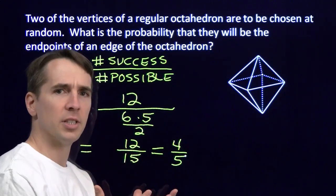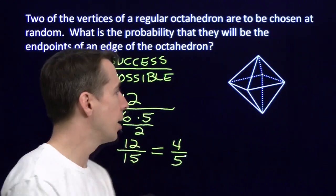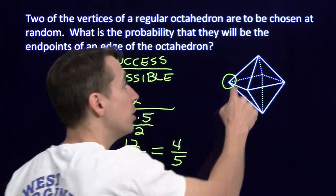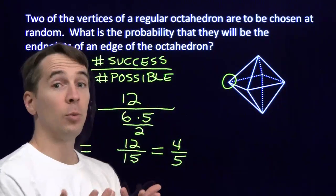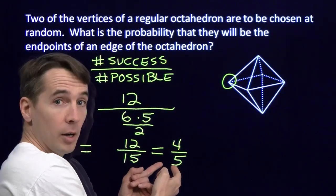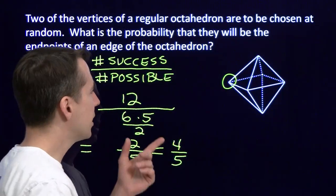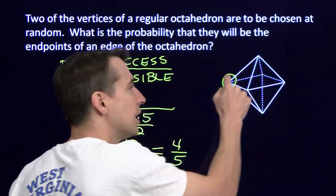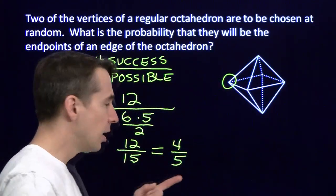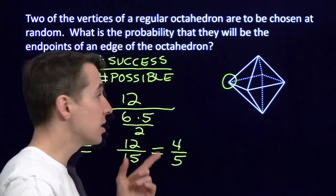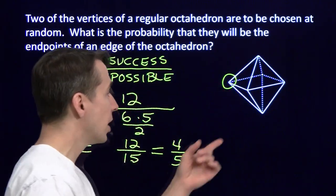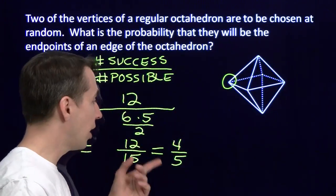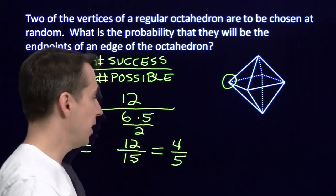Instead of choosing the two vertices at the same time, let's choose them one at a time. Say we chose this one first. Now, no matter what one we choose first, there are going to be five others that we can choose as the second. There are going to be five possibilities. And again, no matter which one we choose first, four of those other possibilities are going to be connected to the original vertex by an edge. There are going to be four successes. So no matter what vertex we choose first, there are five possibilities remaining for the second and four successes out of those five possibilities, so our probability is 4 fifths.